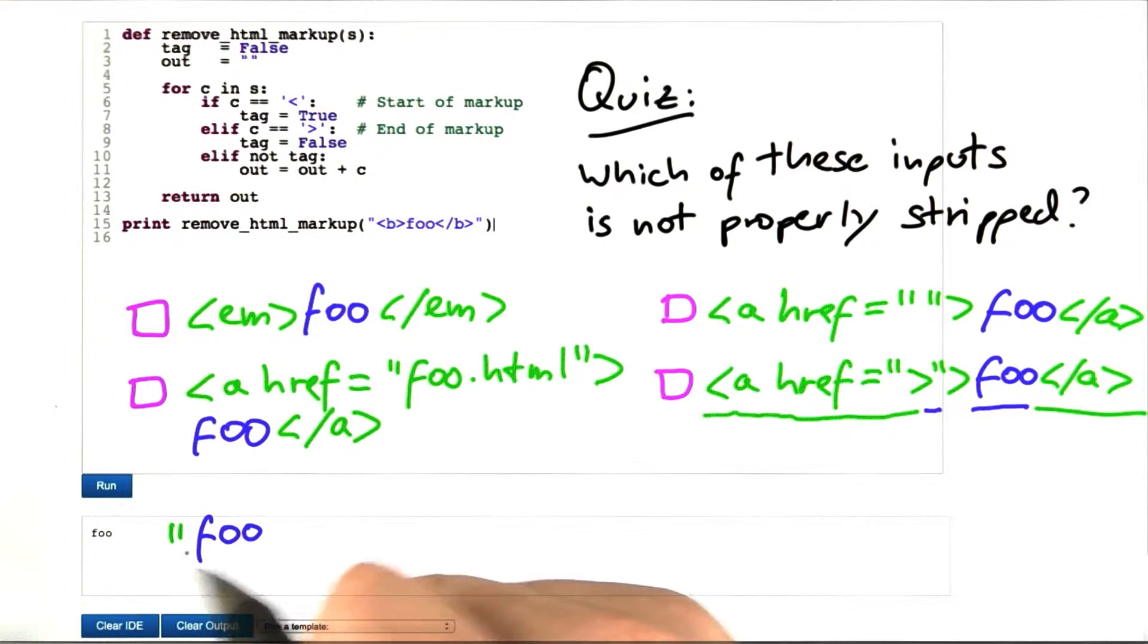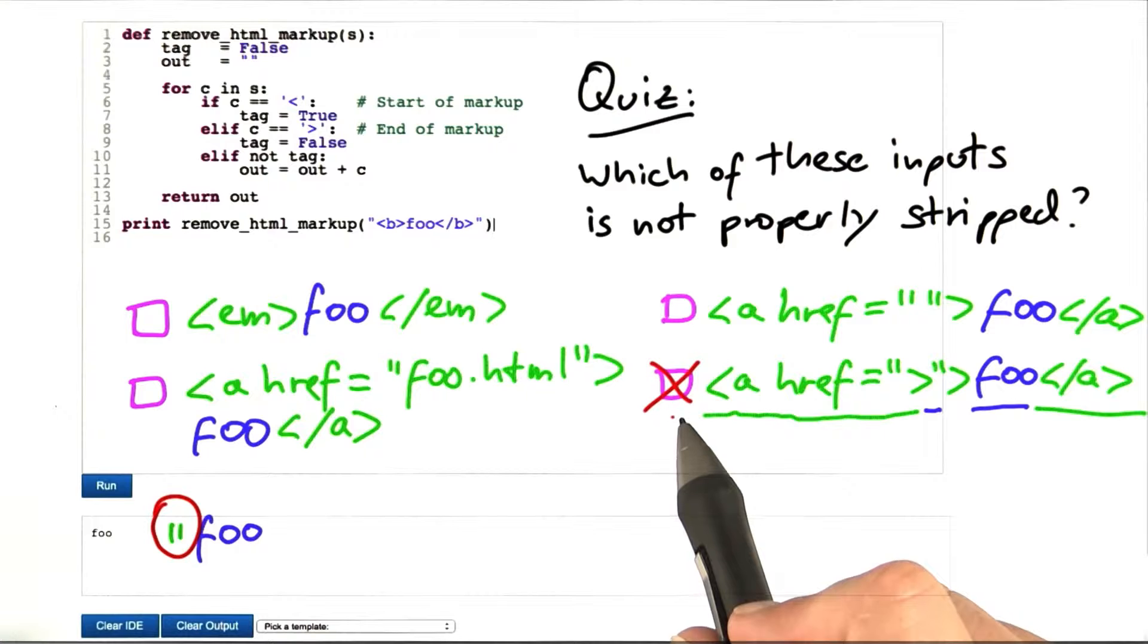So what we should get as output is double quote foo and you can see that the output still contains part of the original HTML markup. So this is the correct answer. The others all work fine.